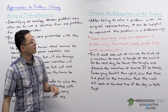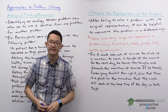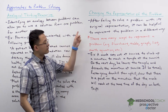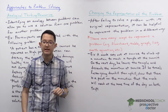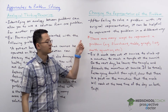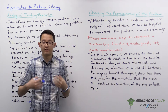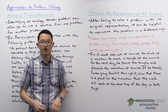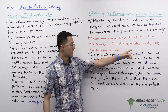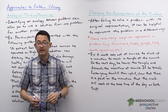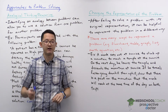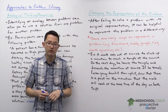Let's now go over another approach: changing the representation of the problem. After you fail to solve a problem with its original representation, it can be helpful to change that representation. There are many ways to represent a problem — as a flow chart, a table, a graph, a list, or a math equation. To give you an example of how this can be helpful, let's take a look at a famous problem called the monk problem.